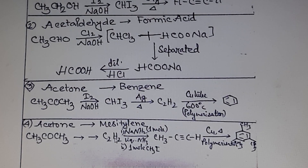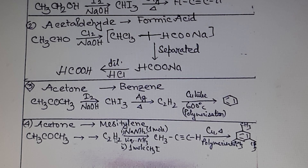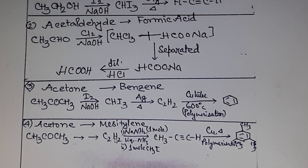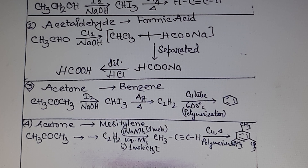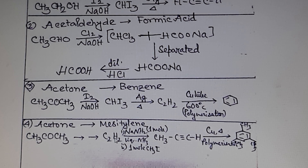Problem 4: acetone to mesitylene, which is 1,3,5-trimethylbenzene. In Problem 3 we prepared an aromatic compound from an aliphatic one. For Problem 4, to prepare mesitylene from acetone, you will have to follow the same path — first prepare acetone to acetylene as done in Problem 3.